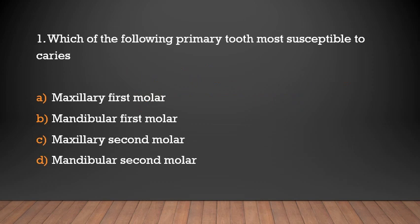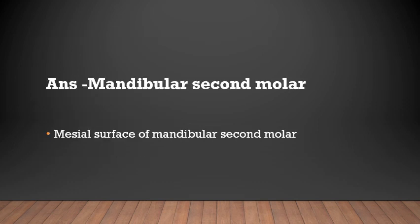Which of the following primary teeth is most susceptible to caries? Options: maxillary first molar, mandibular first molar, maxillary second molar, mandibular second molar. Answer: Mandibular second molar. The mesial surface of the mandibular second molar is most susceptible to caries.